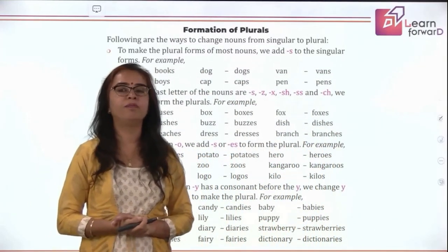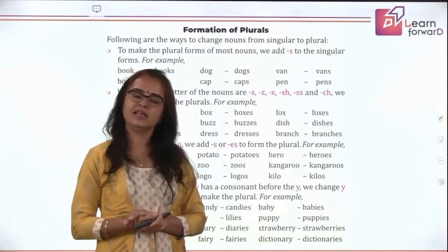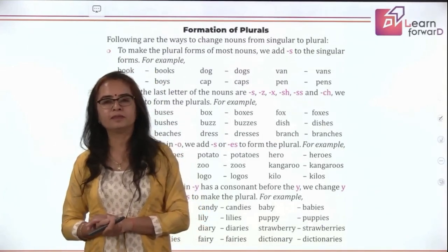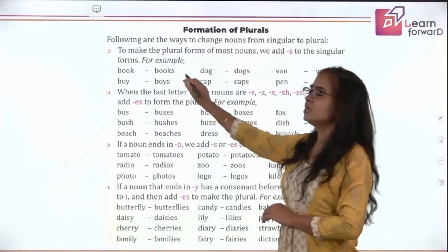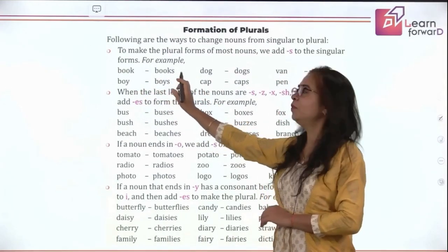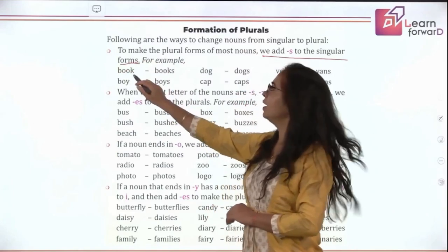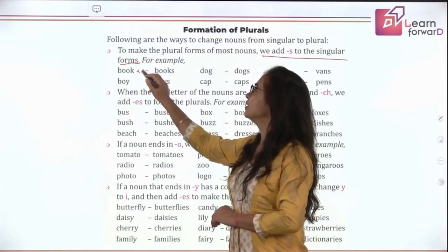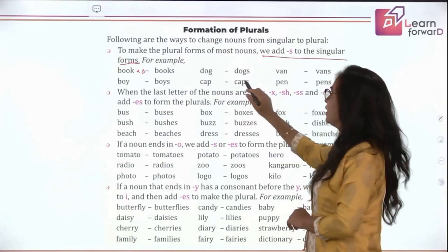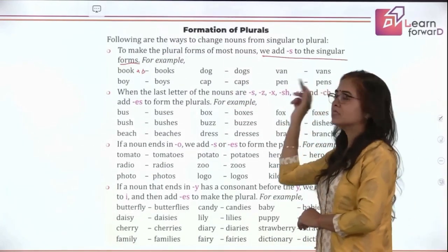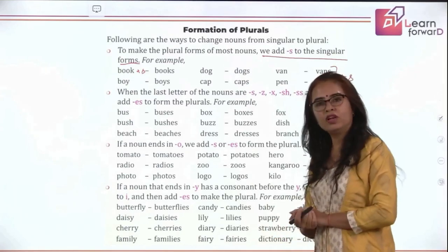We will be learning how to form plural nouns from singular nouns. The first rule is by adding S to the singular noun — we have done this in grade 1 also. The general rule is we just add S. Like: book plus S gives you books, boy gives boys, dog gives dogs, cap gives caps, van gives vans, pen gives pens. We have just added S to these to get the plural form.